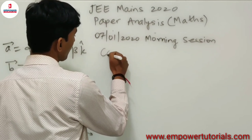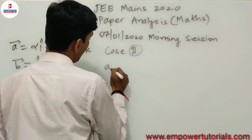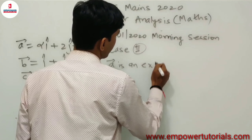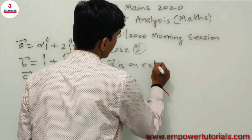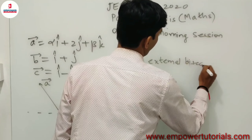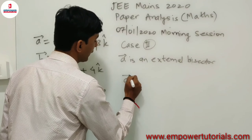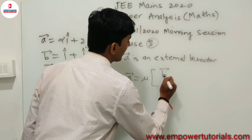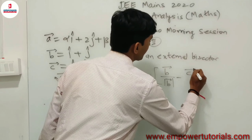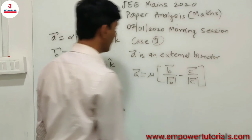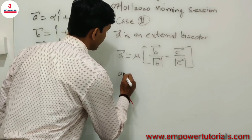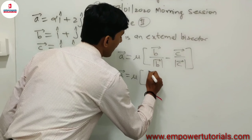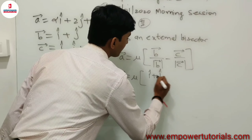In Case 2, **a** is the external bisector of **b** and **c**. We write **a** = μ·(**b**/|**b**| − **c**/|**c**|), where μ is a real parameter. Substituting, **a** = μ·((î + ĵ)/√2 − (î − ĵ + 4k̂)/√18).